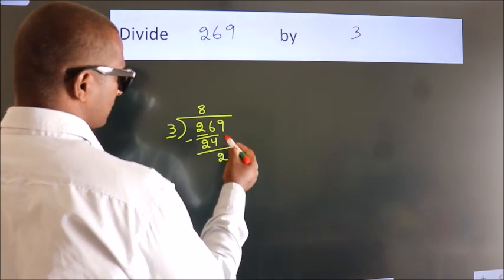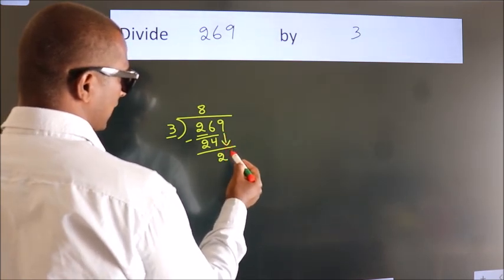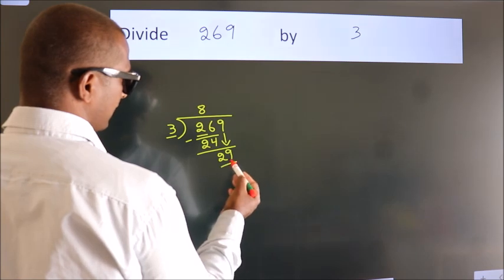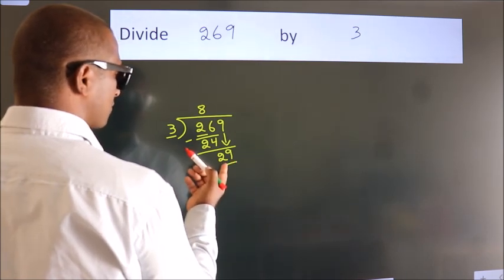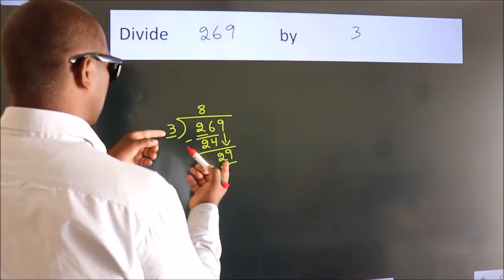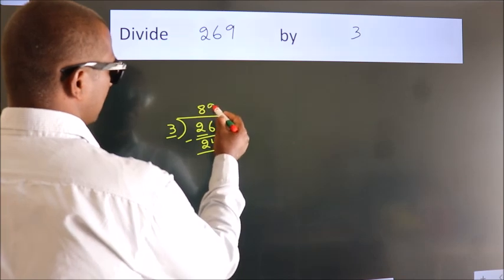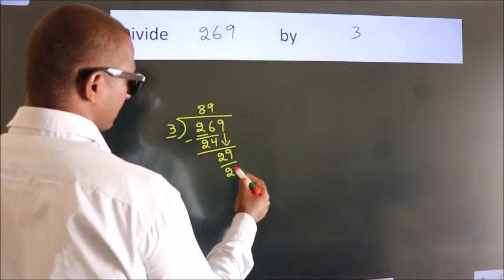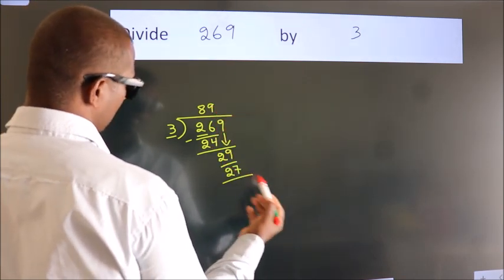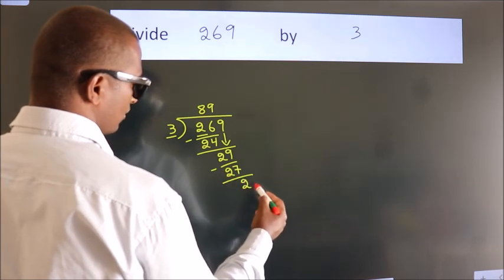After this, bring down the beside number. So 9 down, so 29. A number close to 29 in the 3 table is 3 times 9, which is 27. Now we subtract, we get 2.